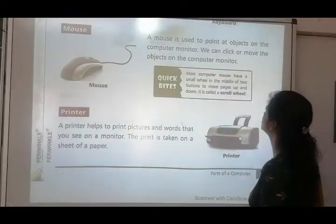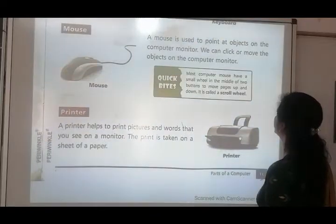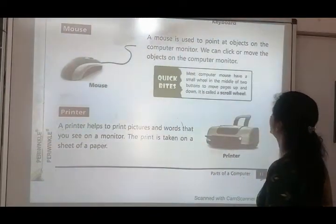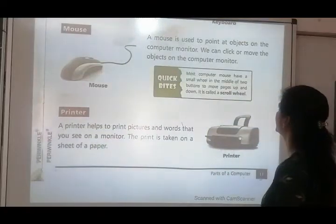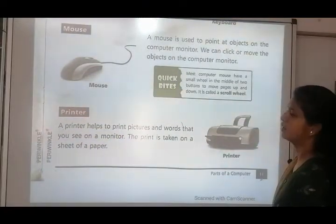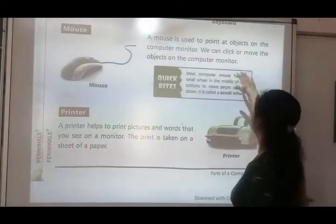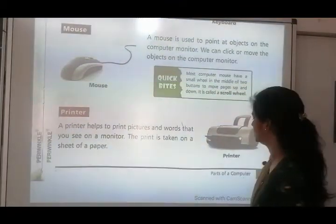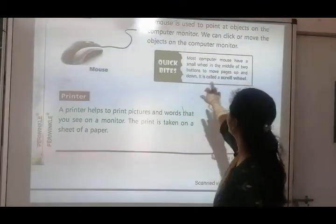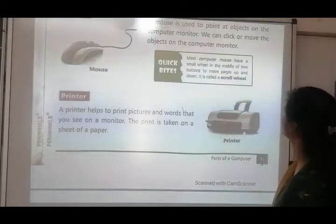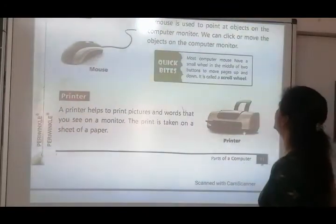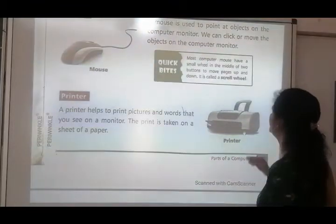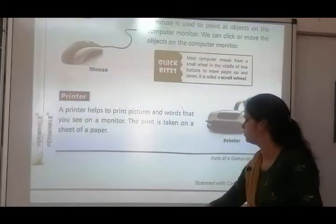Next is mouse. A mouse is used to point at objects on the computer monitor. Mouse ka use karne se, point karne ke liye objects ko monitor mein hum use karte hain. We can click or move the objects on the computer monitor. Quick bite: most computer mice have a small wheel in the middle of two buttons to move pages up and down — it is called the scroll wheel.